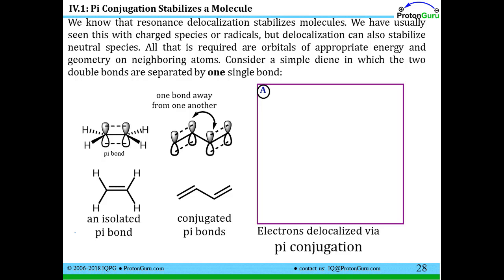Here we're starting our material on pi conjugated systems. Now we know that resonance delocalization stabilizes molecules. We learned that way back in lesson 1.7. And we've usually seen this with charged species or radicals, but delocalization can actually also stabilize neutral species.